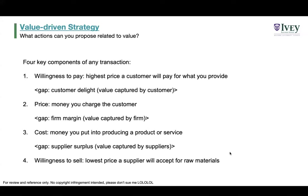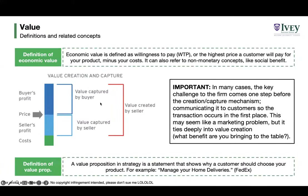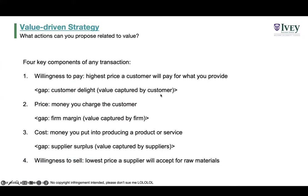But if the price actually charged is $15, the difference between willingness to pay and price is customer delight — the value captured by the buyer. They gain additional value because they could have theoretically paid $30 but were only charged $15. As the seller, if you're selling the hot dog for $15 but it costs $2 to produce, you capture $13 of value — that's your margin as a firm.